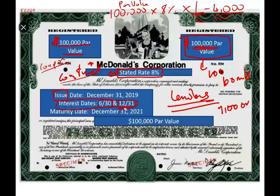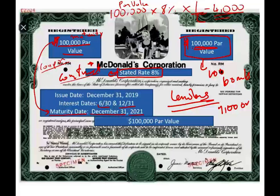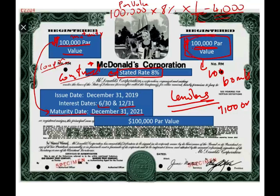The par value is also called the maturity value. This is an important concept to understand in bonds. Maturity means that's the amount you will get when the bond matures. When does the bond mature? There's a maturity date — December 31st, 2021. It means on December 31st, 2021, you can take this piece of paper back to McDonald's and ask them for your $100,000. They will only pay you $100,000 — what's printed on the bond — which is the par value.